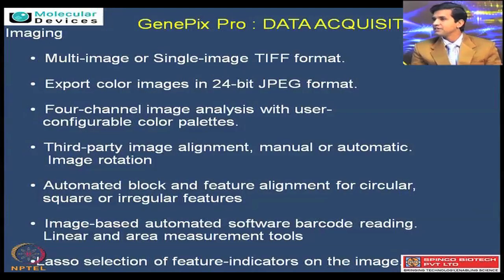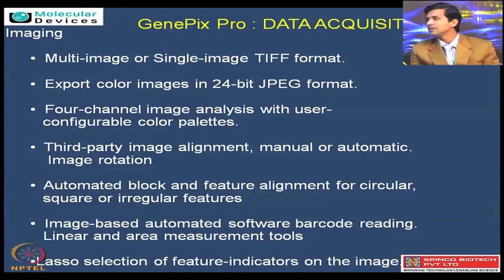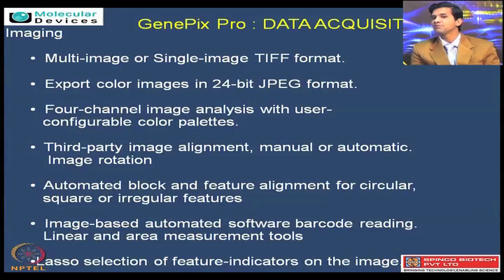As discussed, GenePix Pro software is used for data acquisition. Basically, there are different steps involved in the usual process. The first one is imaging, which is done in the form of multi-image or single-image TIF format. TIF format is used to create the images and export color images in 24-bit JPEG formats. These JPEG formats allow one to view, but the basic data processing will be done on TIF format. Once GenePix Pro is configured with hardware controls, image acquisition can be done using 2 to 4 lasers, and third-party image alignment can be done manually or automatically.